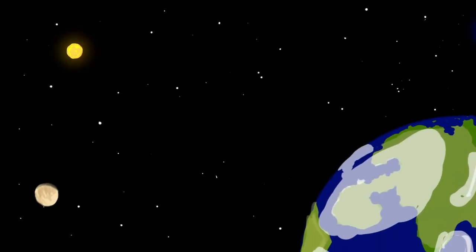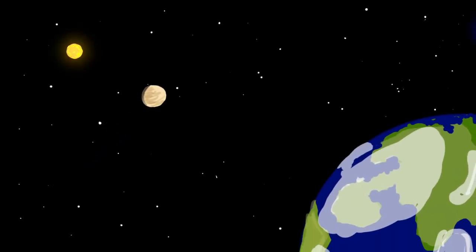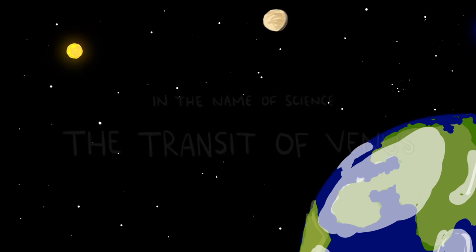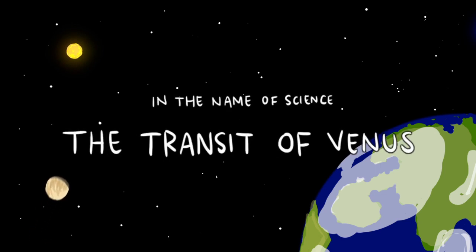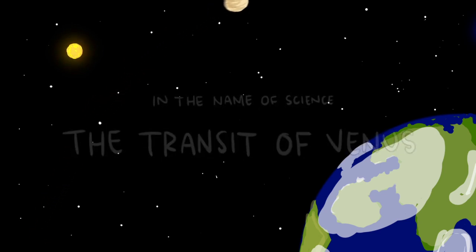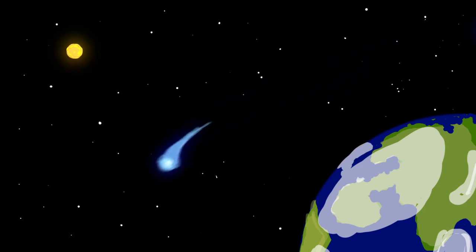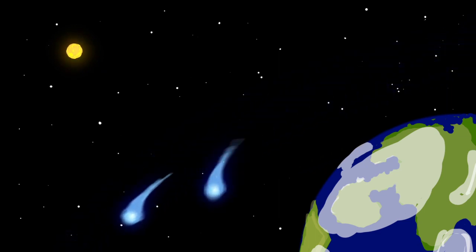In June of 2012, the planet Venus passed directly between the Earth and the Sun. This event, known as the transit of Venus, occurs twice in an eight year span, but not again for more than 100 years, making the pair of transits more rare than Halley's Comet, but less rare than two Halley's Comets.